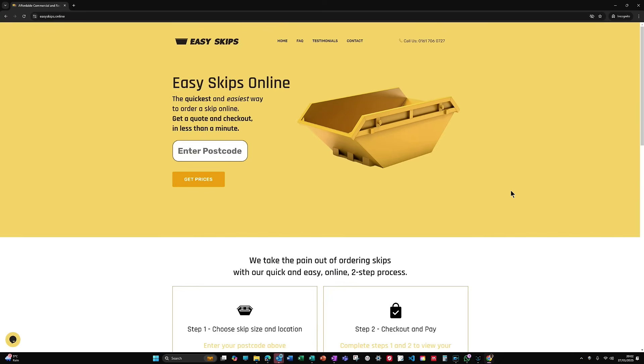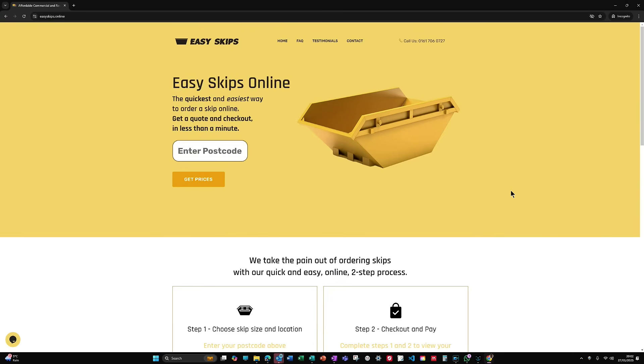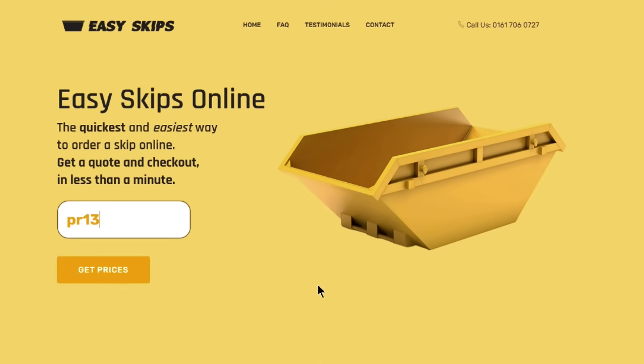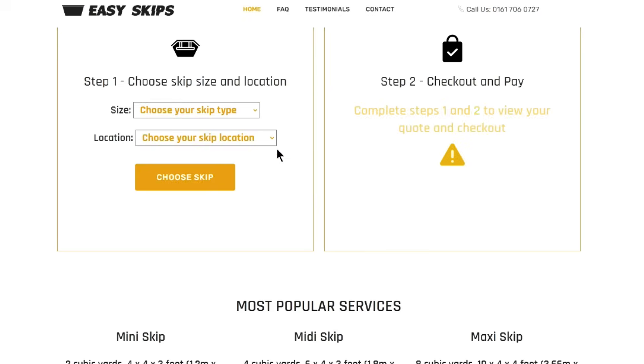Don't skip this bit. So it must be the easiest way to order a skip in the world right? All you've got to do is go to easyskips.online, put your postcode in, choose a skip size.